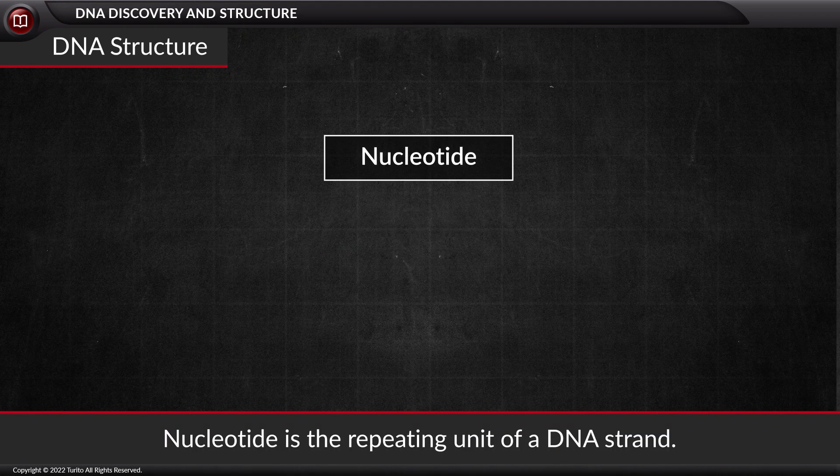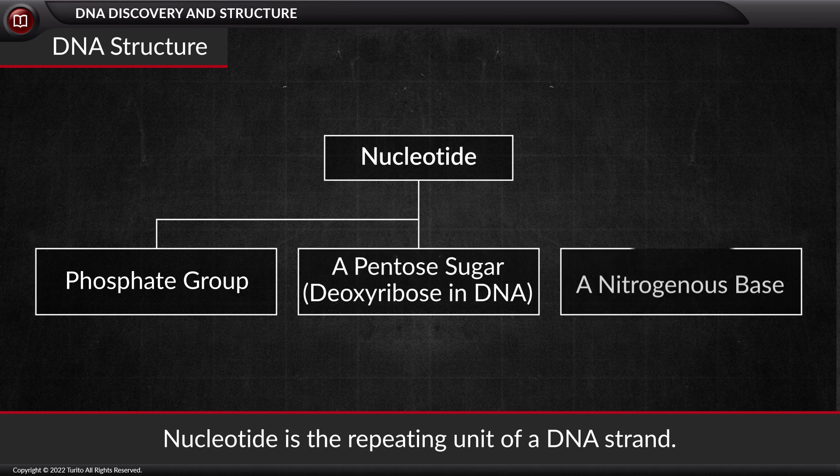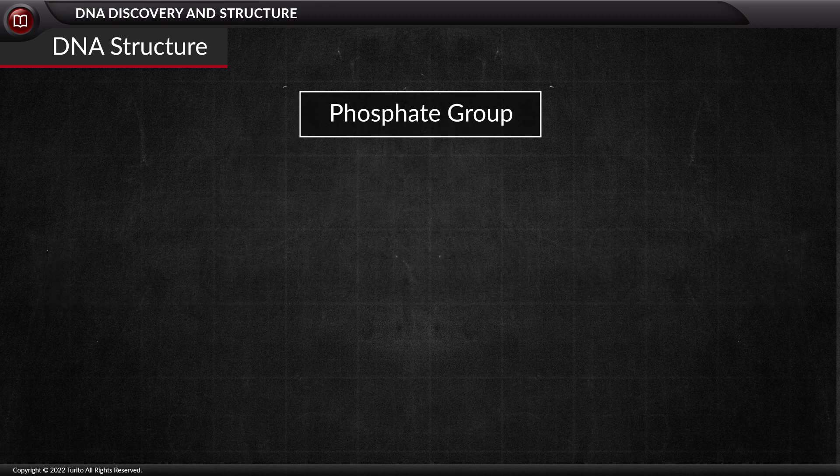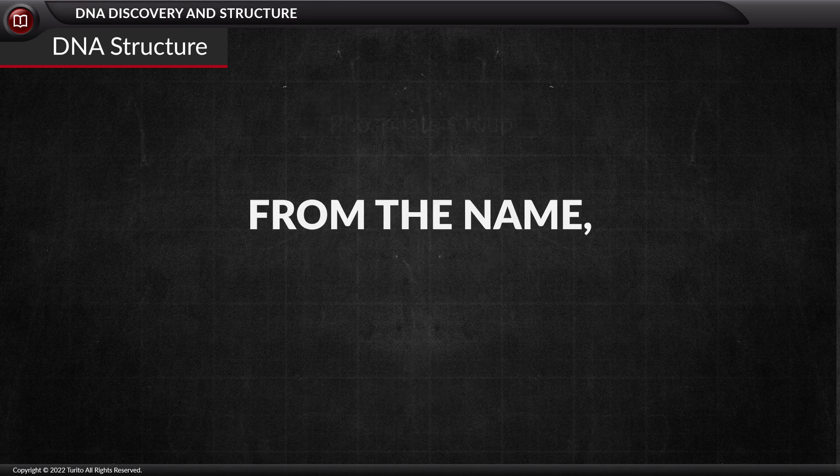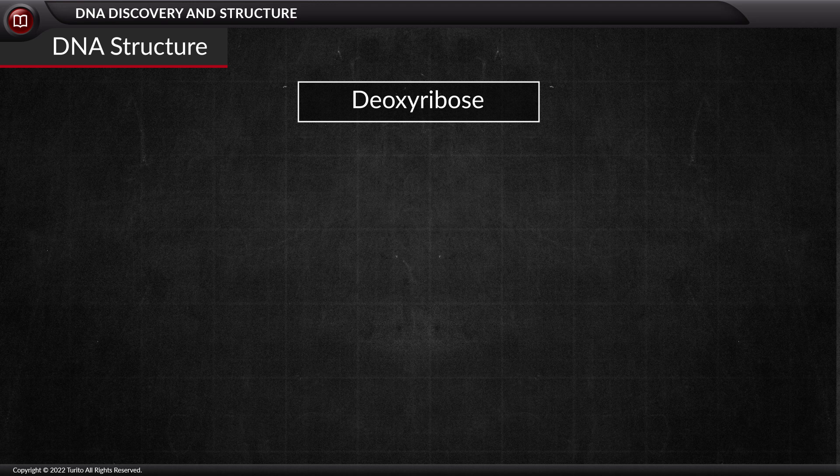A nucleotide is a combination of three components: phosphate, deoxyribose sugar, and a nitrogenous base. To talk about each component, the phosphate is present in the form of PO4³⁻, which is involved in forming phosphodiester bonds. From the name, can you guess the sugar present in DNA? The sugar present in DNA is deoxyribose sugar, a pentose sugar comprising five carbons.